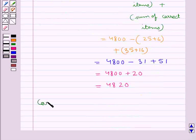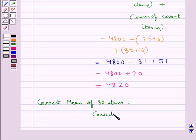Now, the correct mean of 80 items would equal the correct sum of 80 items divided by the total number of items, which is 80.